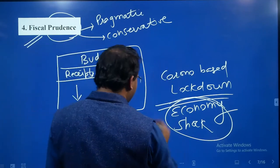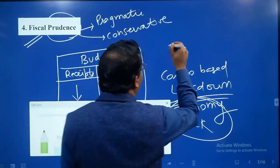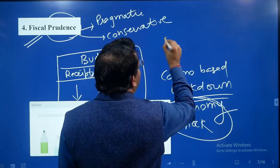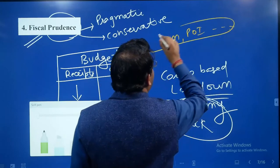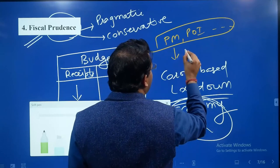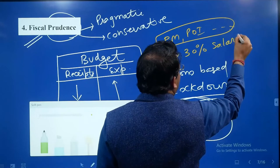For example, during this corona lockdown, the PM, President, etc., have declared that they will take a self-declared cut of 30% in their salaries.